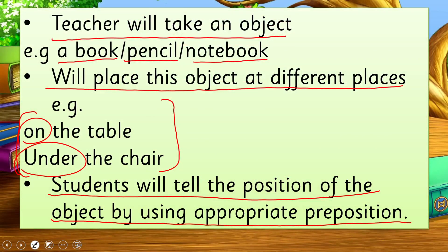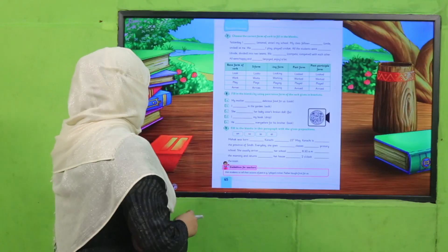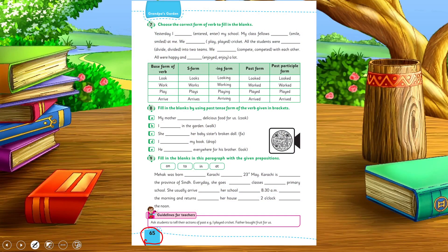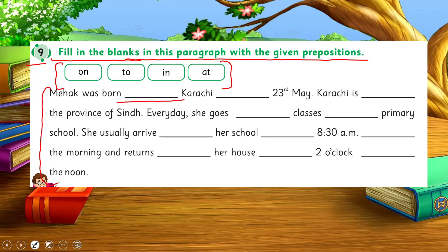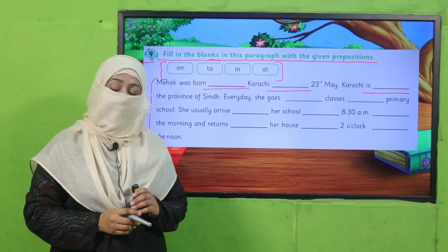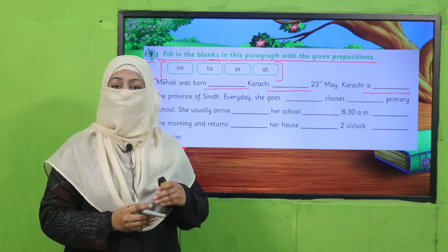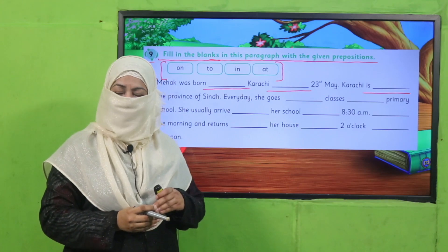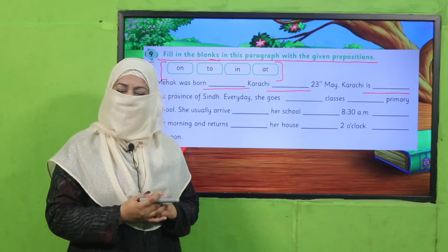Good job! Now let's practice from your book. Open your book to page number 65 — here is question number 9. You have to fill in the blanks of this paragraph with the given prepositions. The prepositions are given; you have to use the correct one to show the position accordingly. Pause the video and complete the task. Teachers, please guide the children to reach the answer without telling them directly — help them understand how to select the correct preposition.